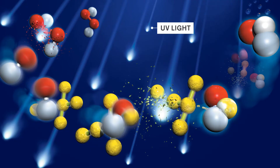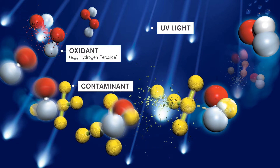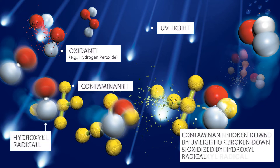When UV light traverses water, it can be absorbed directly by targeted chemical contaminants and by the specific oxidant added to the water, resulting in the breaking of chemical bonds. Contaminants are either broken down directly by the UV light, or the UV light-absorbing oxidants generate powerful radicals that rapidly interact with and oxidize them.